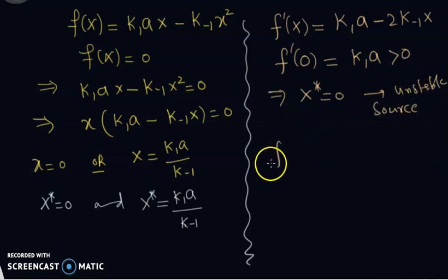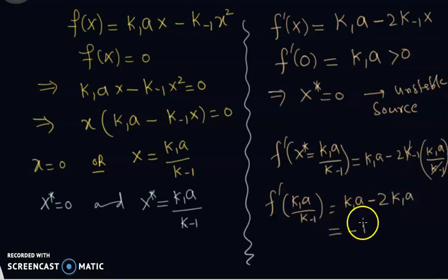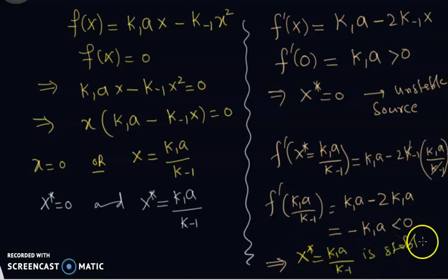And F' at X* = K₁A/K₋₁ equals K₁A minus 2K₋₁ multiplied by K₁A/K₋₁. On simplification we get K₁A minus 2K₁A, which gives minus K₁A, which is less than zero. This implies that this equilibrium point X* = K₁A/K₋₁ is stable. In other words, it's a sink, stable, or an attractor.